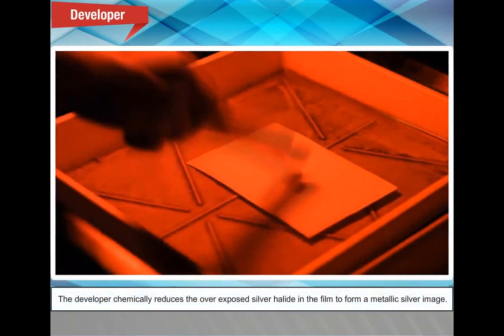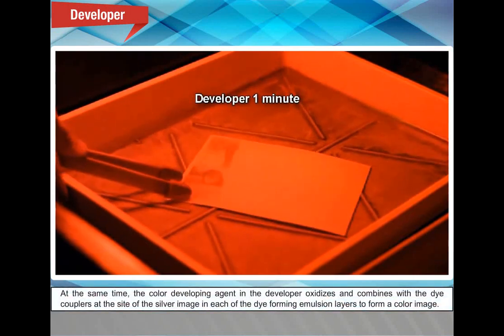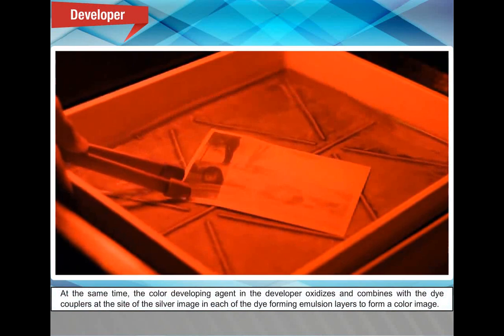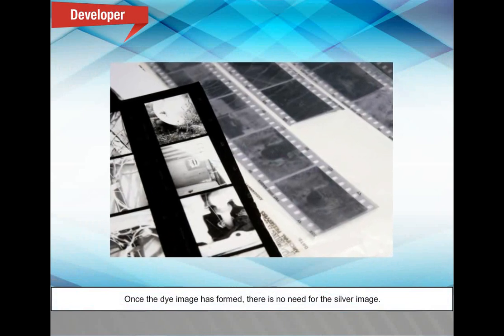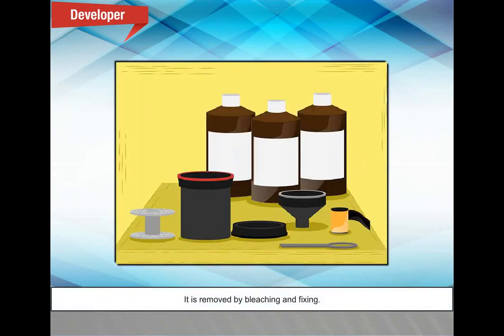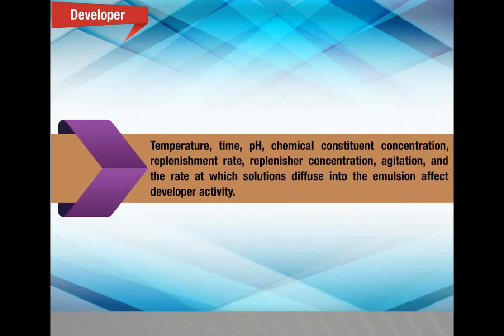The developer chemically reduces the exposed silver halide in the film to form a metallic silver image. At the same time, the color developing agent oxidizes and combines with the dye couplers at the site of the silver image in each of the dye-forming emulsion layers to form a color image. Once the dye image has formed, there is no need for the silver image — it is removed by bleaching and fixing. The amount of cyan, magenta, and yellow dye formed depends on exposure and developer activity. Temperature, time, pH, chemical constituent concentration, replenishment rate, replenisher concentration, agitation, and the rate at which solutions diffuse into the emulsion affect developer activity.